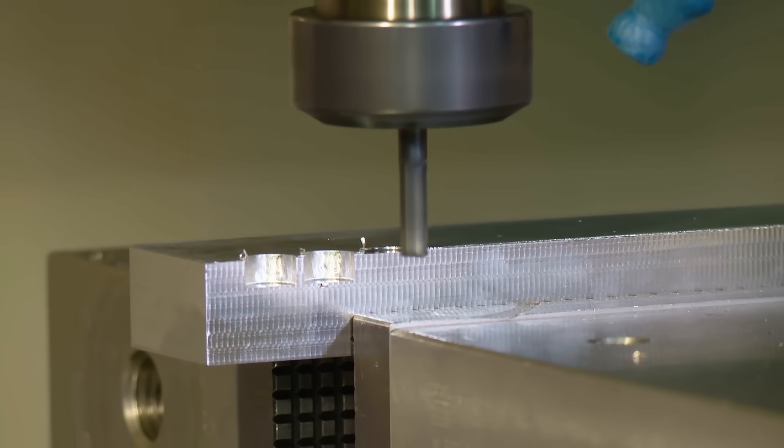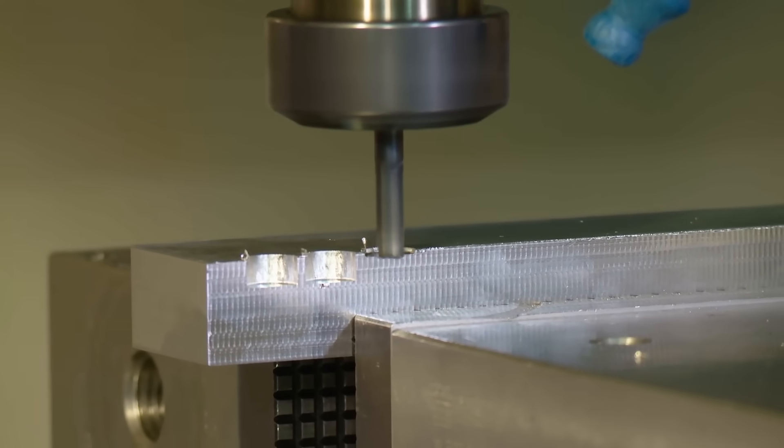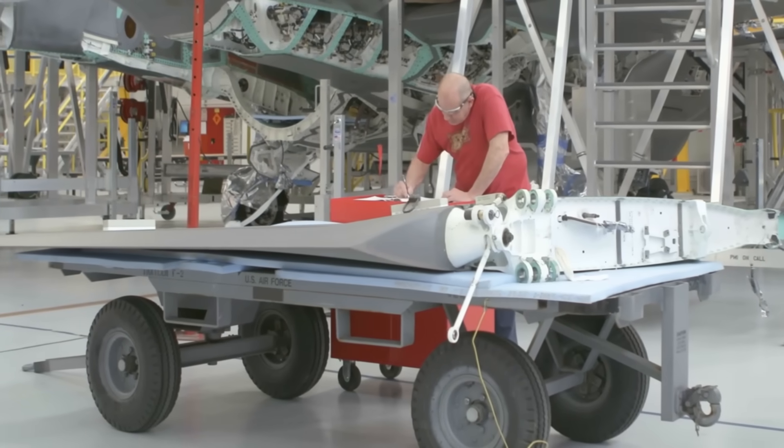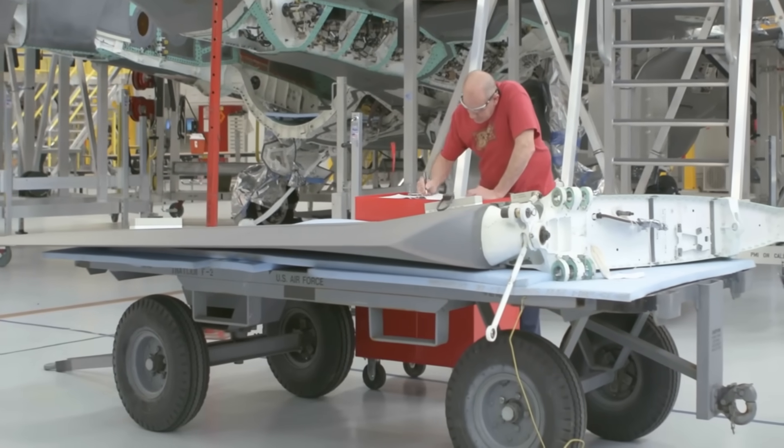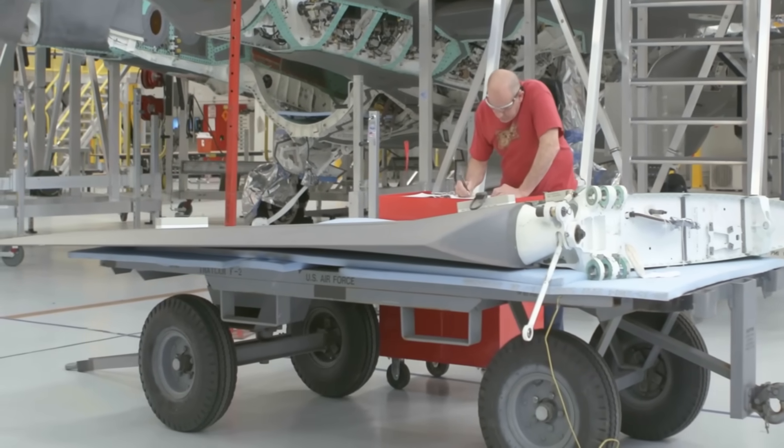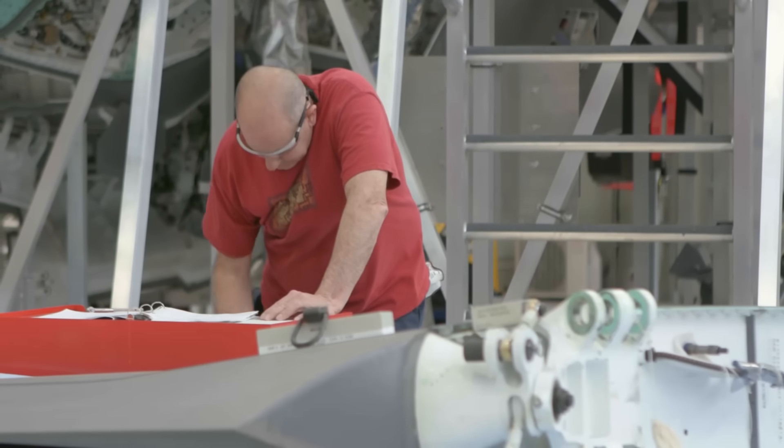Often parts are machined down from giant blocks of raw material to their final form. In aviation we measure this waste with the buy to fly ratio, which divides the weight of the final part by the weight of the raw material it was manufactured from.